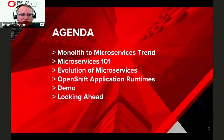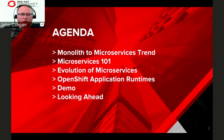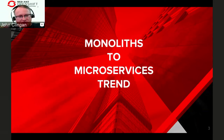We're going to talk about the monolith-to-microservices trend, an overview of microservices, the evolution of microservices, how OpenShift and Kubernetes offer value to microservice developers, and the actual product — OpenShift Application Runtimes. If we have enough time, a quick demo, and a looking-forward section. Red Hat OpenShift Application Runtimes is shortened to the RHOAR acronym.